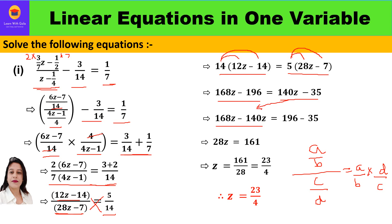140z comes to the left-hand side as positive, and minus 196 goes to the right-hand side as positive, giving plus 196 minus 35. So 168z minus 140z is 28z, equal to 161, because 196 minus 35 is 161. Therefore z equals 161/28, which simplifies by dividing by 7 to give z = 23/4.